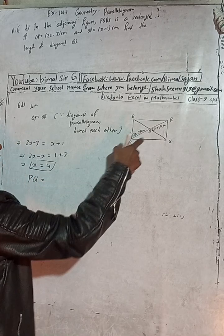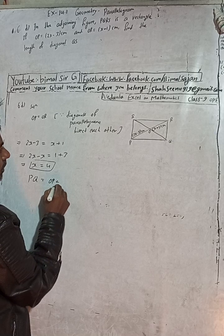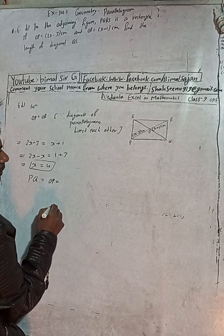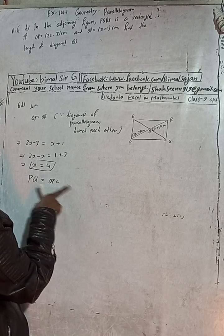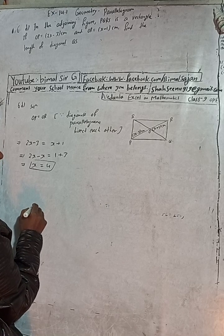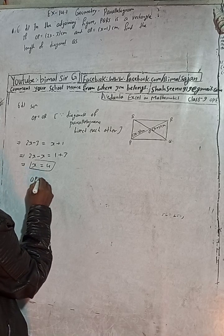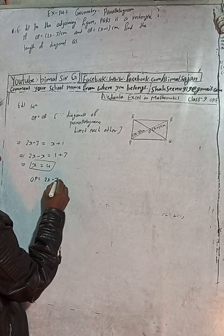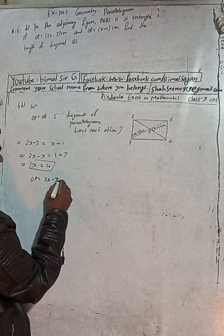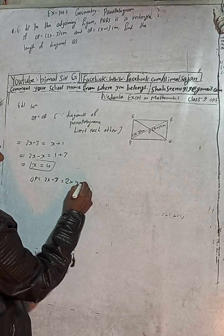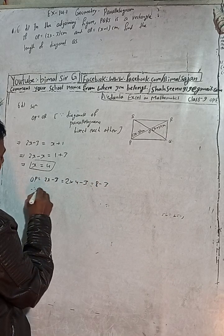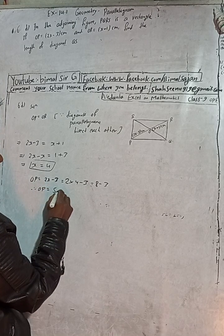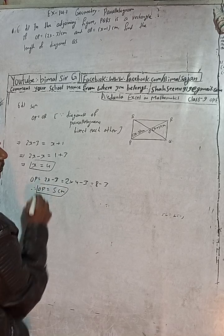Now find the length of diagonal QS. PR is equal to OP plus OR. So OP equals 2x minus 3, which is 2 times 4 minus 3, that is 8 minus 3, therefore OP equals 5 cm.